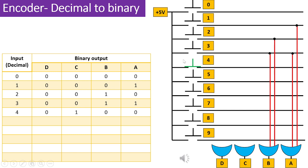Similarly, when switch 4 is pressed, it activates the line on the opposite side of the switch, transmitting a logic 1. However, as the binary representation of decimal 4 is 0100 in a 4-bit format, the OR gate with its output labeled as input C is connected to the switch marked as 4. Consequently, when switch number 4 is pressed, the output changes to 0100.